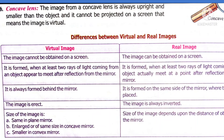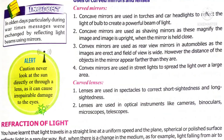Here are some uses of these mirrors and lenses. Concave mirrors are used in torches and car headlights, as well as shaving mirrors. Convex mirrors are used in automobiles and in street lights. Curved lenses are used in spectacles to correct short-sightedness and long-sightedness. Lenses are also used in cameras, binoculars, microscopes, telescopes, and more.